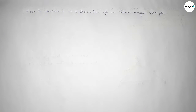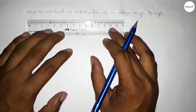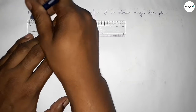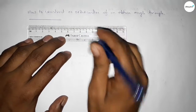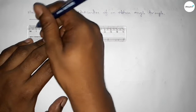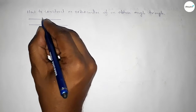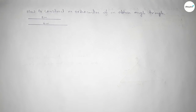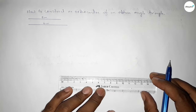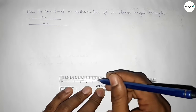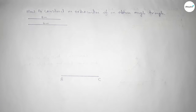Now constructing an obtuse angle triangle. First, drawing a line of length five centimeters, then drawing another line of length six centimeters to draw the obtuse angle triangle. So this one is five centimeters and this one is six centimeters. Taking here point B and here point C.